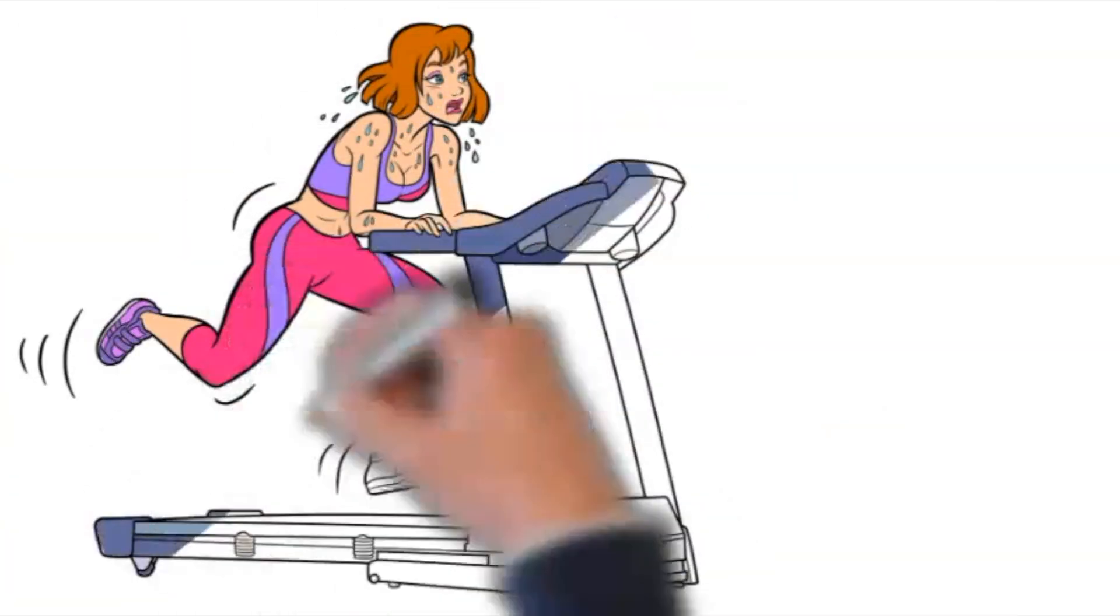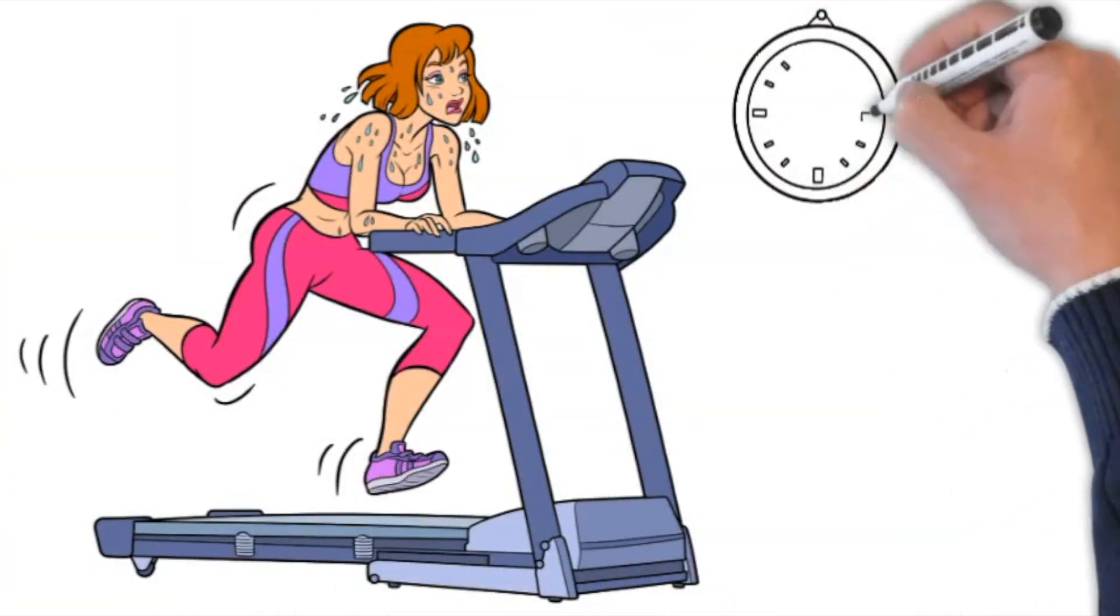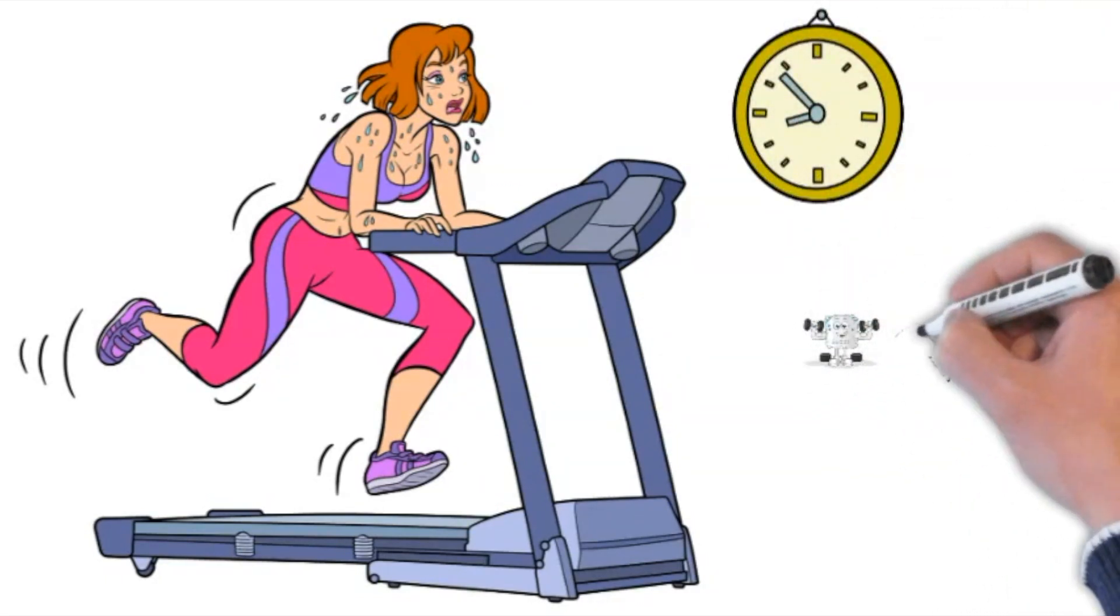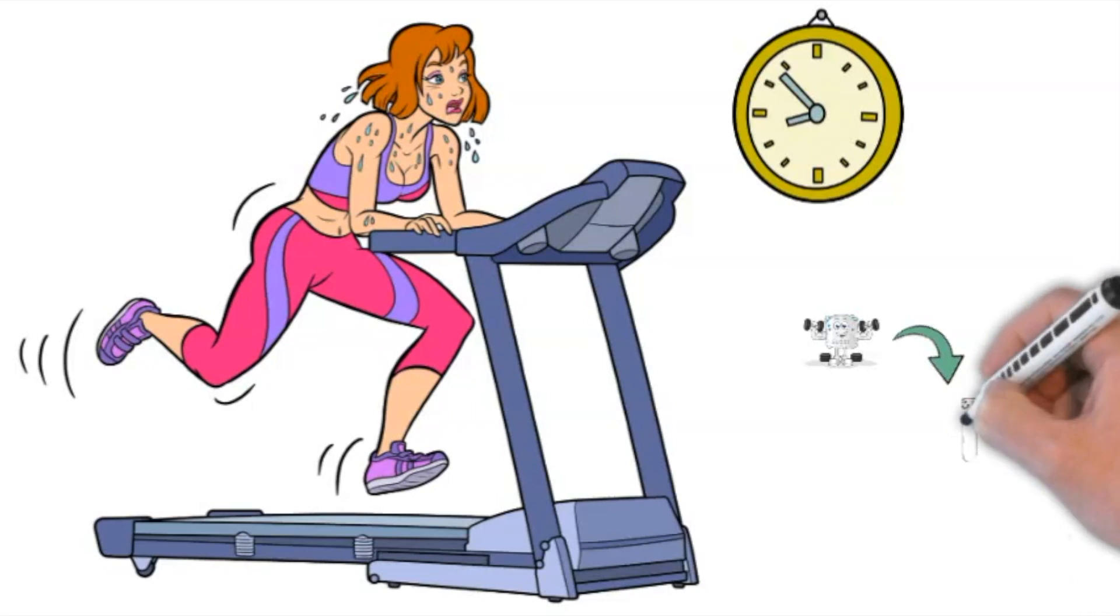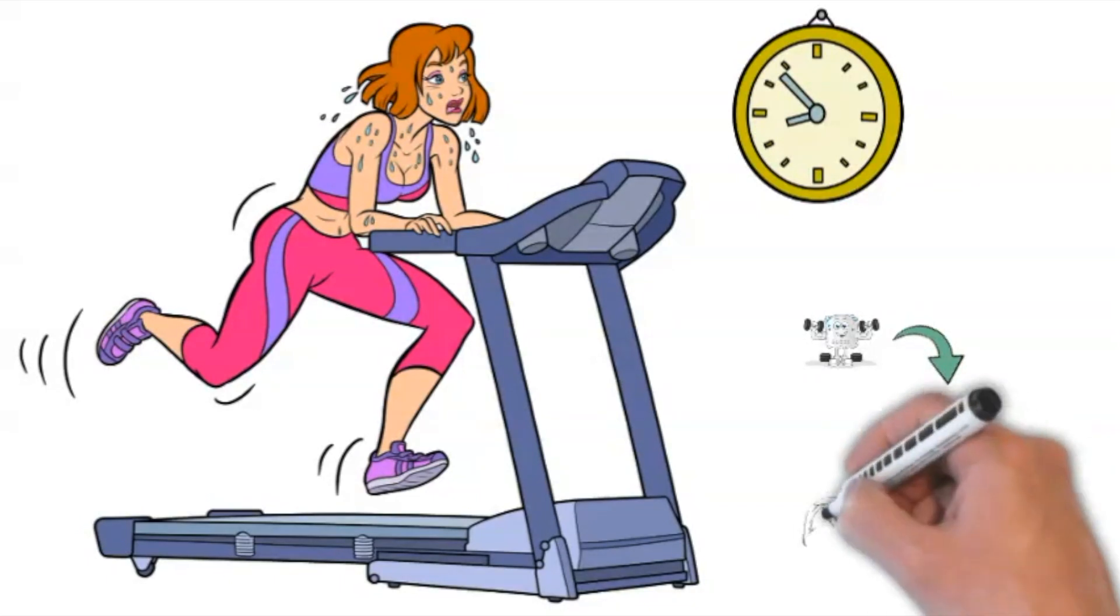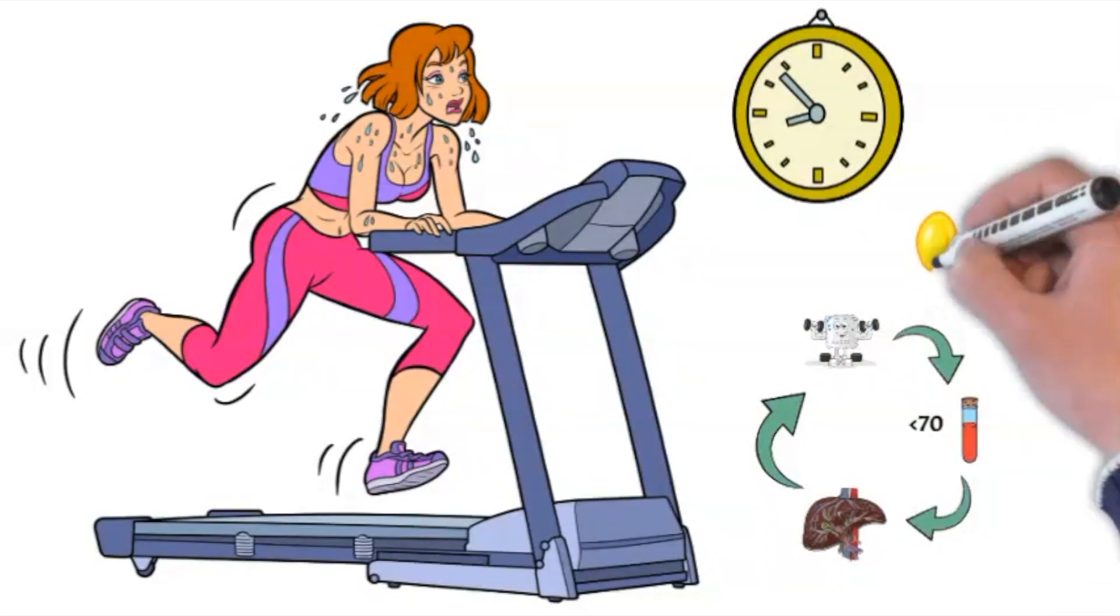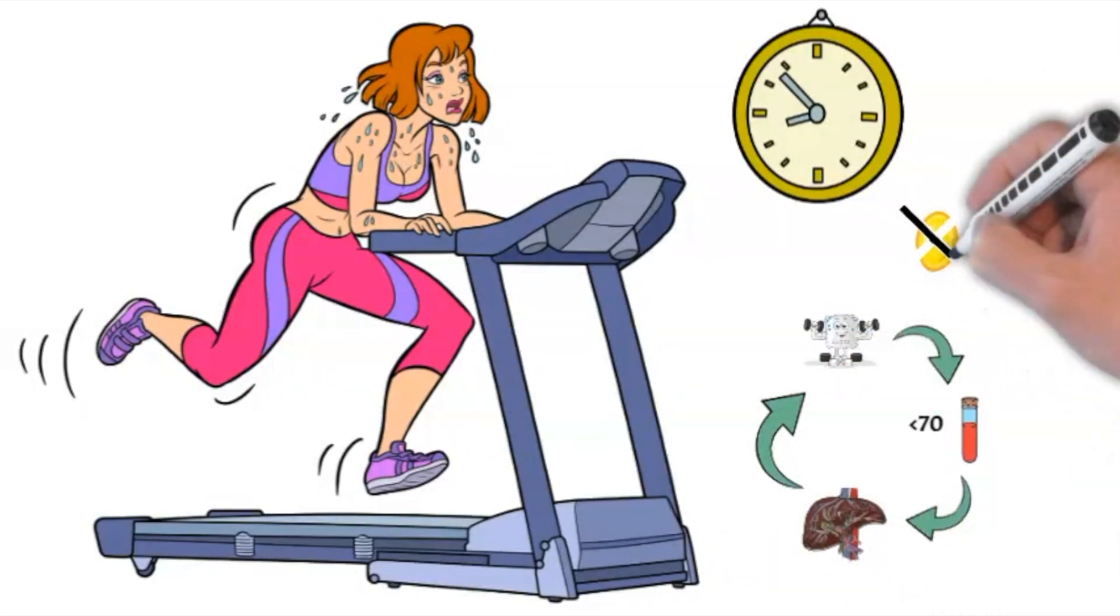So when we're on the treadmill running and running and running, what we're doing is we're actually burning the sugar in our bloodstream. Not only that, but when the sugar is low your body taps into the glycogen store in the liver to keep the glucose level up and the cycle continues. All that happens while you're not burning fat cells at all.